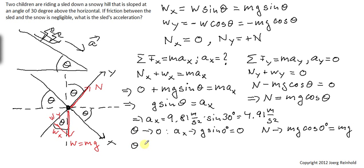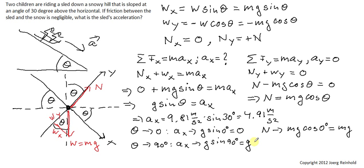What happens if the angle theta goes to 90 degrees? Then the acceleration goes to g times sine 90°, and sine 90° is 1, so the acceleration will be g. A sled on a vertical wall will just fall — free fall with g — positive because we defined positive as going downwards. The normal force goes to mg times cosine 90°, and cosine 90° is 0, so the normal force is 0. There's no normal force if the sled falls down a vertical wall.